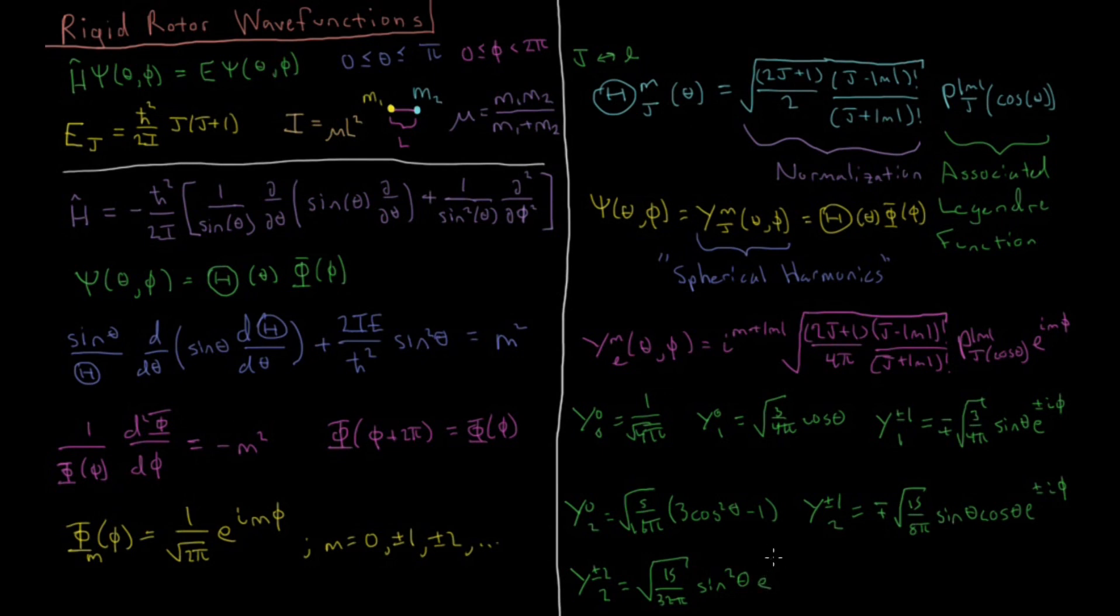So you see how it comes into play. Whenever we have a non-zero value of m, you get this complex exponential factor tacked on there. You have some polynomial of cosine theta which pops out in either cosine or sine theta, and a normalization constant that follows on just based off of what the value of j and m are.